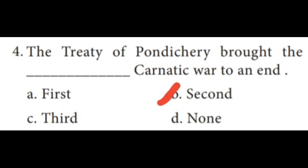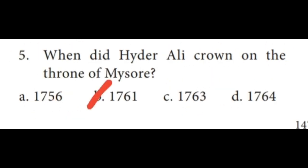Fourth one: the Treaty of Pondicherry brought the Dash Carnatic War to an end — the correct answer is Second. Fifth one: when did Hyder Ali ascend the throne of Mysore? The correct answer is 1761.